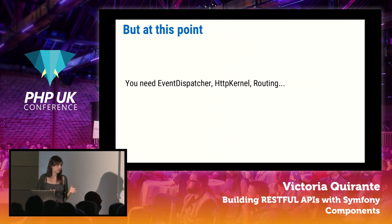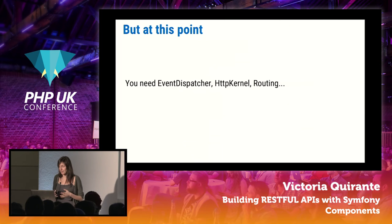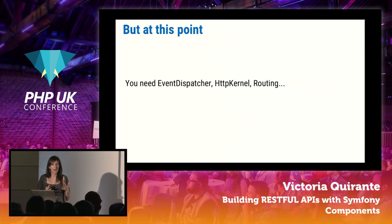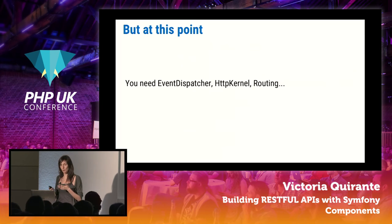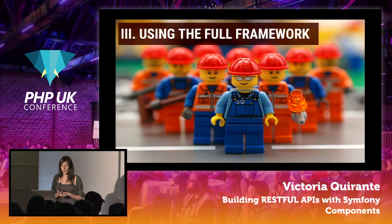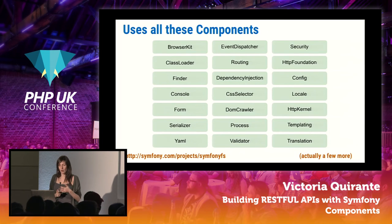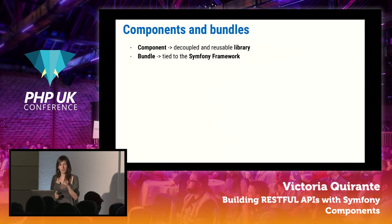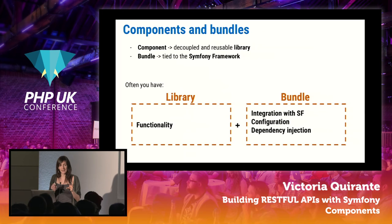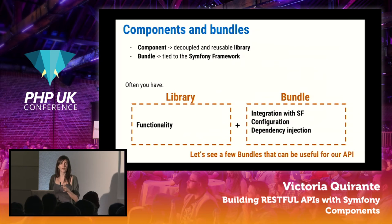At this point, with these five components, you'd likely feel you need more things that a real framework provides — routing, event dispatcher, and so on. So what if we use the whole framework? The framework uses all these components and more. Unlike components, which are independent libraries, Symfony also has bundles tied to the framework. Often you have a library plus a bundle that integrates it into the framework. I'm going to show you a few bundles that are useful for your API when using the whole framework.